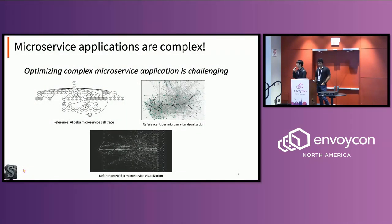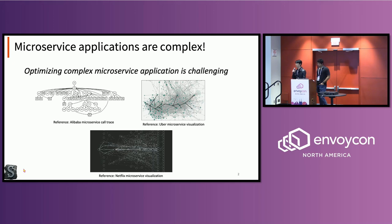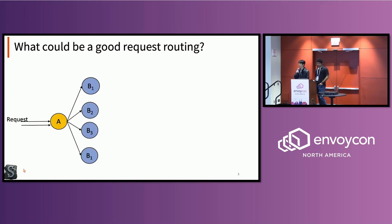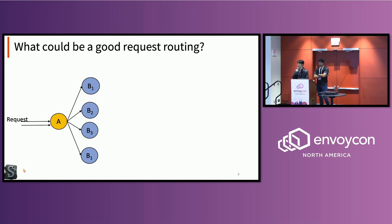Microservices applications are very complex, which makes it really challenging to optimize performance. One service can call multiple dependent services, and one application can consist of multiple tiers. So we raised the question: what could be a good request routing strategy for this kind of complex microservices application?